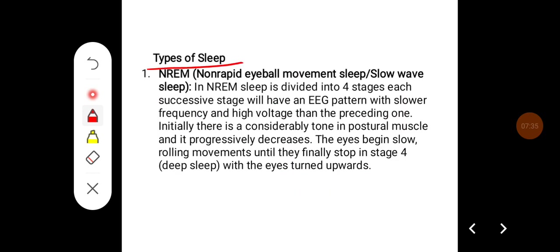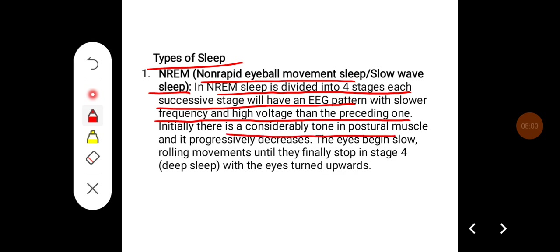There are different types of sleep, categorized into NREM type and REM type. NREM — non-rapid eyeball movement sleep, or slow wave sleep — is divided into four stages. Each successive stage has an EEG pattern with slower frequency and higher voltage than the preceding one. Initially, there is considerable tone in the postural muscles, which progressively decreases. The eyes begin slow rolling movements until they finally stop in stage 4, that is deep sleep, with the eyes turned upwards.